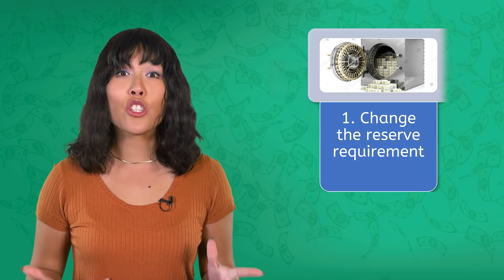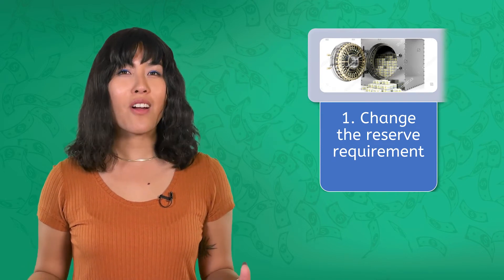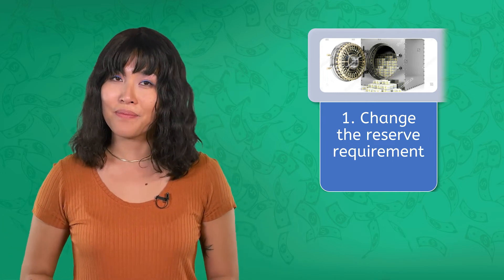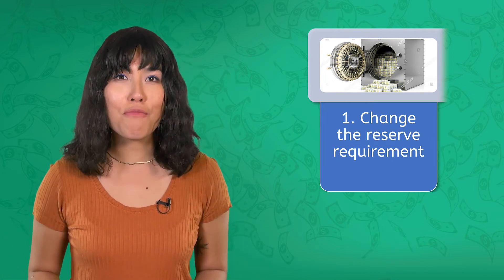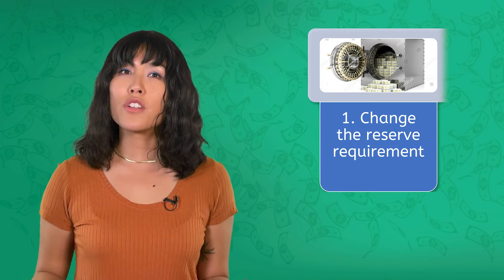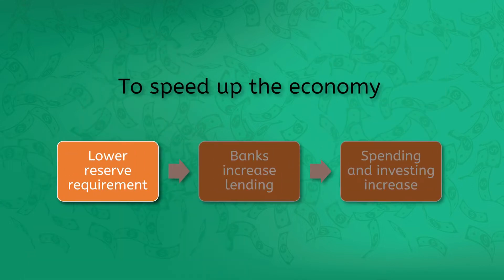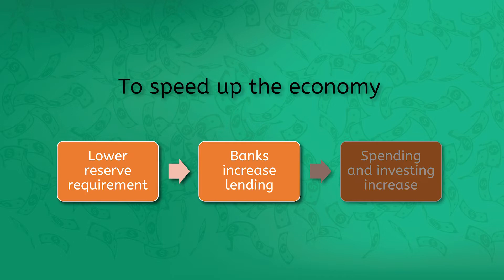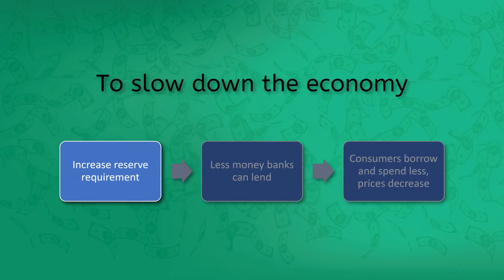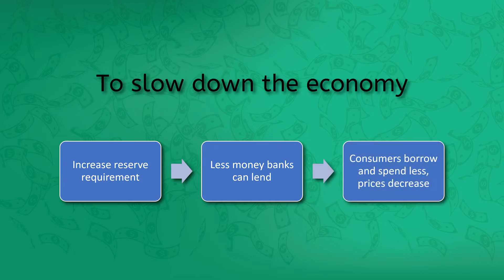The first tool is to change the reserve requirements for banks — the amount of money from their deposits that banks must hold onto to meet regulations and provide for withdrawals. To increase supply and speed up the economy, the Fed can lower the reserve requirement, allowing banks to loan out more money, leading to more spending and investment. To decrease supply and slow down, the Fed can raise the reserve requirement, restricting lending, which slows borrowing and spending and eventually results in lower prices.